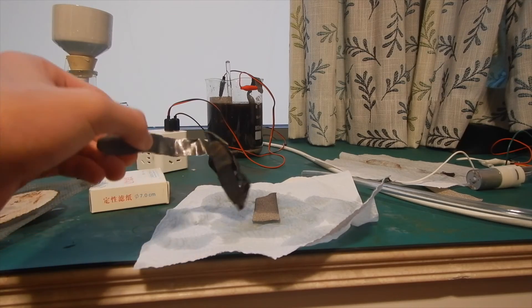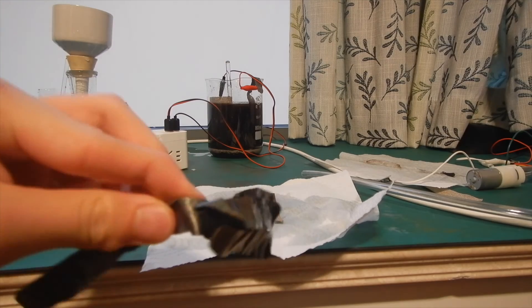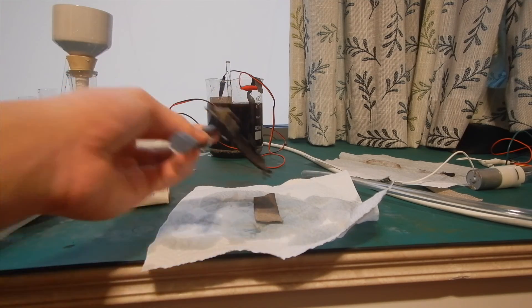Finally, after washing, this is our lead dioxide anode. You can clearly see the brown coating of lead dioxide. Do not copy me by touching the lead with bare hands.